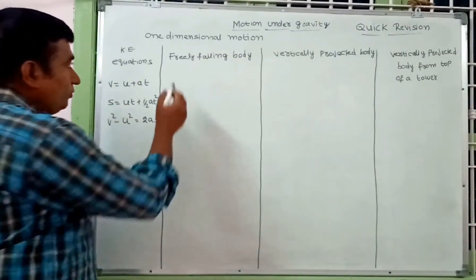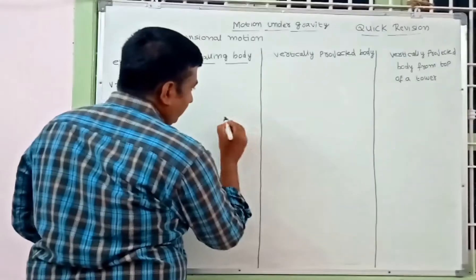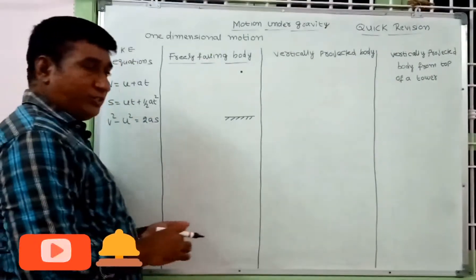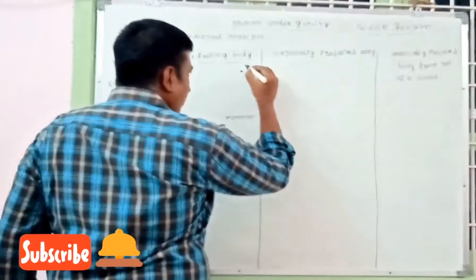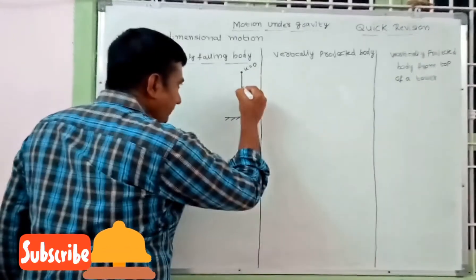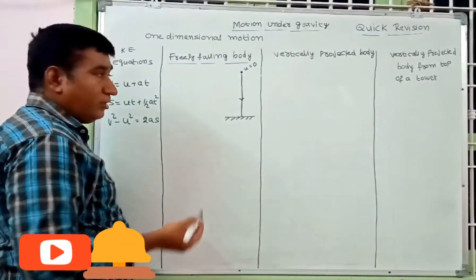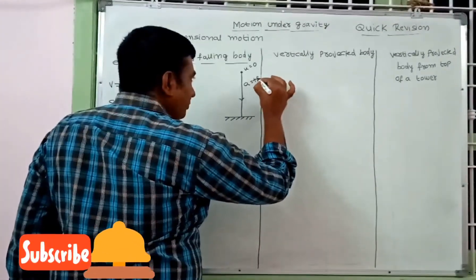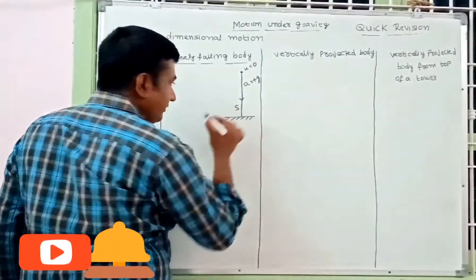For a freely falling body, when an object falls freely — if this is the ground and this is the object falling — there is no applied velocity, so u = 0. The object travels downward, so acceleration is positive: a = +g. The displacement is taken as s.